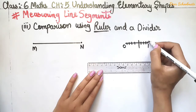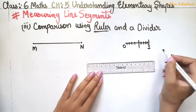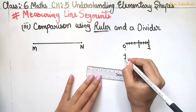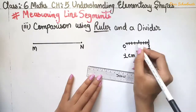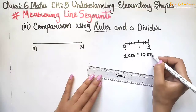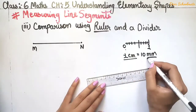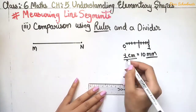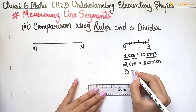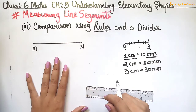These small parts are called millimeters. One centimeter equals 10 millimeters. So two centimeters equals 20 mm, and three centimeters equals 30 mm. Now let's do a comparison using the ruler.